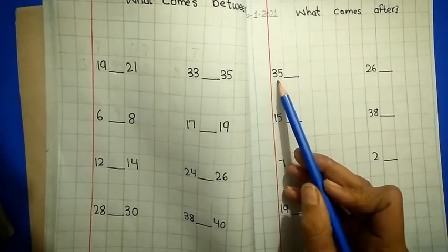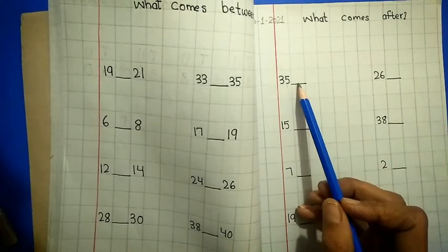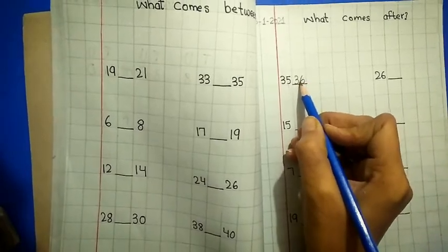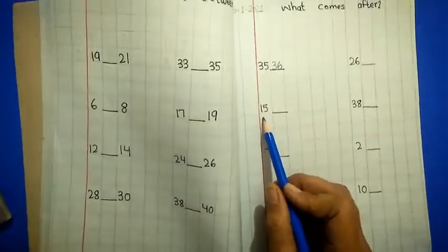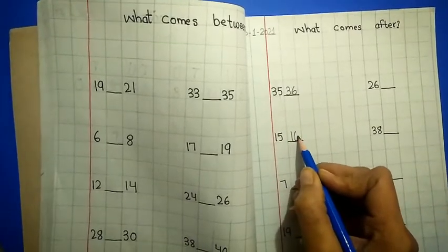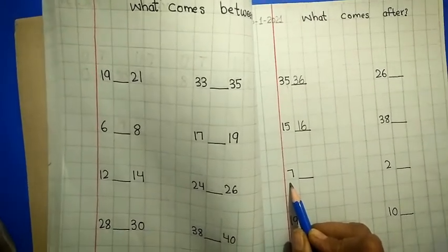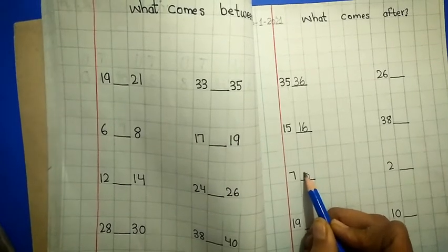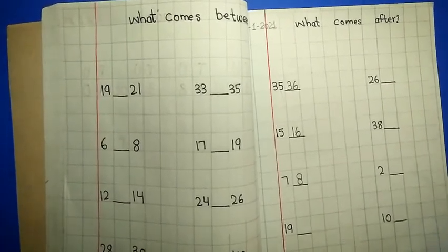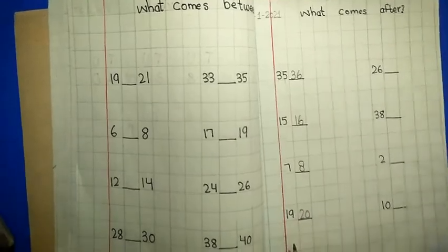Which number is this? 35. Now tell me what comes after 35. Very good, 36. Write with me, 36. Good. Here is number 15. What comes after 15? 16. Good. Number 7. What comes after 7? 8. Good. 19. What comes after 19? 20. Complete the rest of the page with the help of your parents. Thank you.